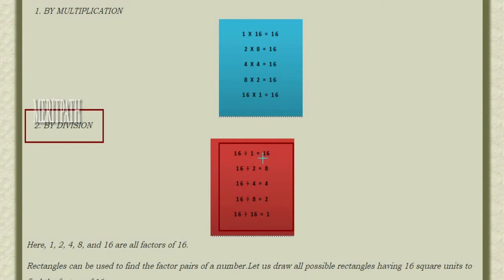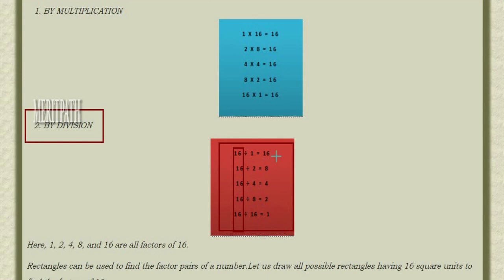After dividing, we get a quotient. So 16 ÷ 1 = 16, 16 ÷ 2 = 8, 16 ÷ 4 = 4. The divisor and the quotient are both called factors. So all the numbers present here — 1, 2, 4, 8, and 16 — are the factors of 16.